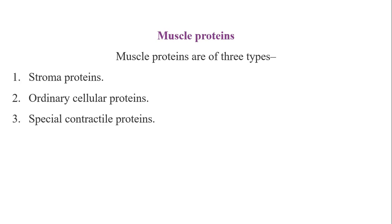The second type of muscle protein consists of ordinary cellular proteins present in the cytoplasm. They also contribute one-fifth of the total muscle protein. Most important among them are the enzymatic proteins present in the sarcoplasm, which catalyze various chemical reactions of the muscle cells.